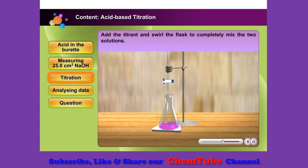Carefully turning the stopcock, add small amounts of hydrochloric acid to the flask. Continuously swirl the flask to completely mix the two solutions. Continue additions until one drop of titrating solution causes a colour change which lasts for at least 30 seconds. This is the end point of the titration.